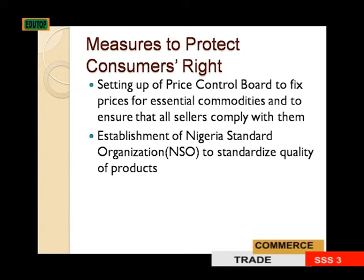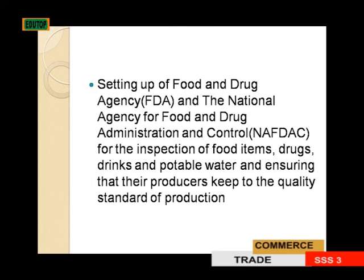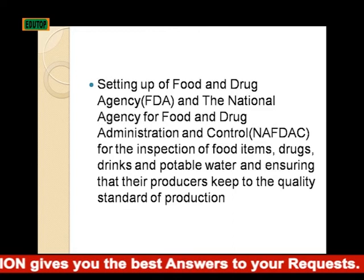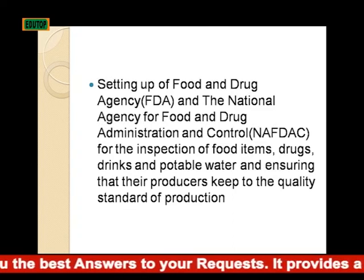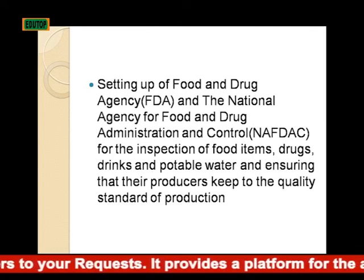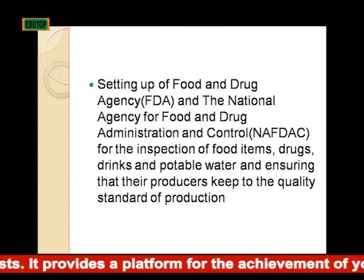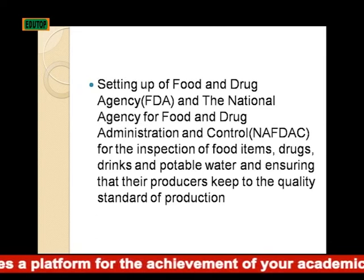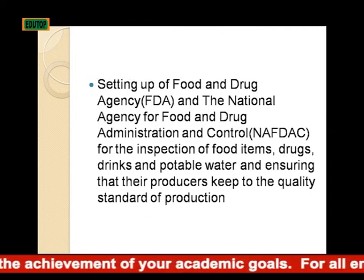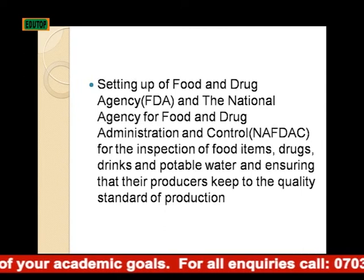Measures to protect consumers' rights. One, setting up of a price control board to fix prices for essential commodities and to ensure that all sellers comply with them. Two, establishment of the Nigeria Standard Organization to standardize quality of products. Three, setting up of food and drug agencies — the FDA — and NAFDAC, the National Agency for Food and Drug Administration and Control, for the inspection of food items, drugs, drinks, and potable water, ensuring that producers keep to quality standards.